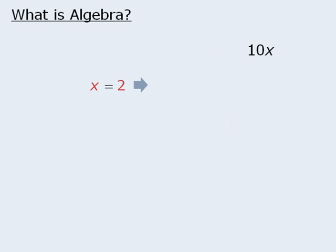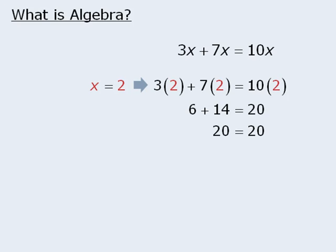Similarly, we can evaluate 10x when x equals 2 by replacing x with 2. When we evaluate the right-hand side, we get 20. So when x equals 2, 3x plus 7x and 10x both evaluate to be 20.